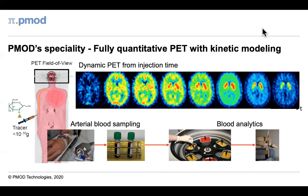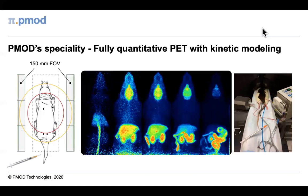PMOD's speciality is fully quantitative PET, meaning deriving physiologically quantified information from dynamic PET data. Dynamic PET involves the continuous acquisition of data from the time of injection, normally focusing on a single organ such as the brain. Mathematical models are used to describe the tracer kinetics, and for the most detailed models the arterial tracer concentration has to be measured as well — this is referred to as kinetic modeling. In small animals, the larger field of view (e.g., 150mm) can make it possible to obtain an image-derived input function, though the gold standard is still blood sampling, which is feasible in mice and rats.